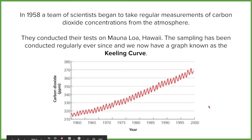On this screen you can see the Keeling Curve, which shows the amount of CO2 that's been in the atmosphere since 1958. As you can see, there's a positive trend — it's moving upward as we go through 1960 up to 2000, going from around 315 parts per million up to just over 370 parts per million at the end of the 1990s.